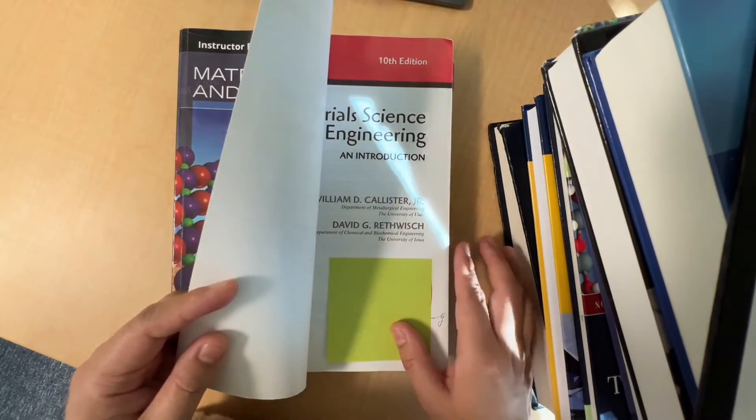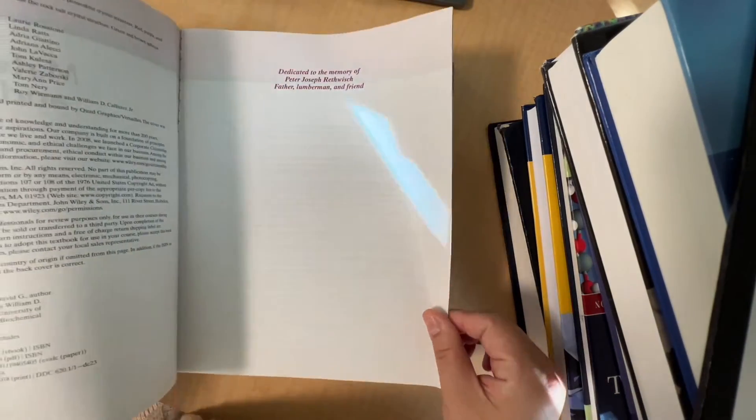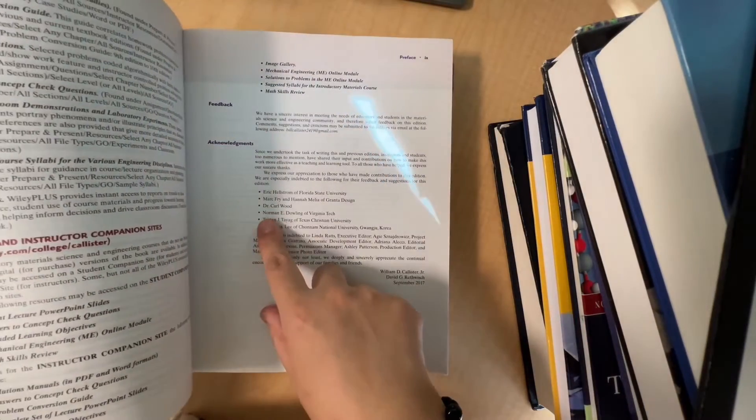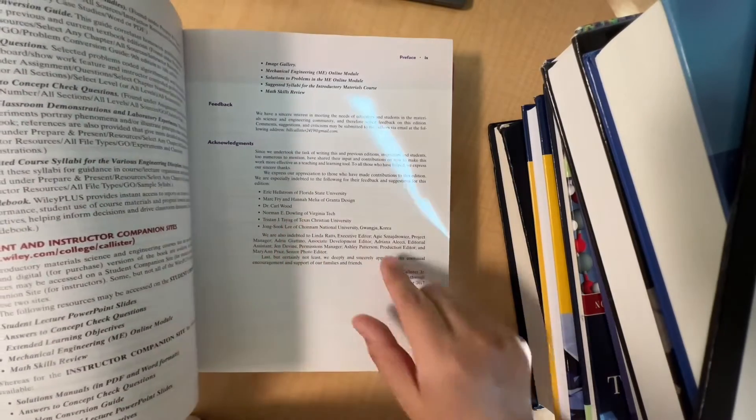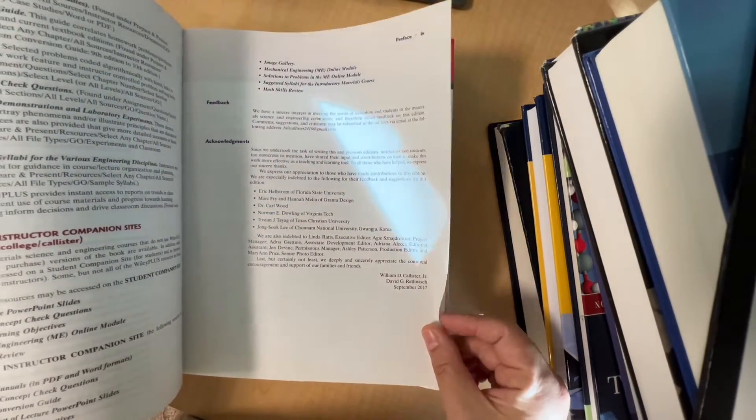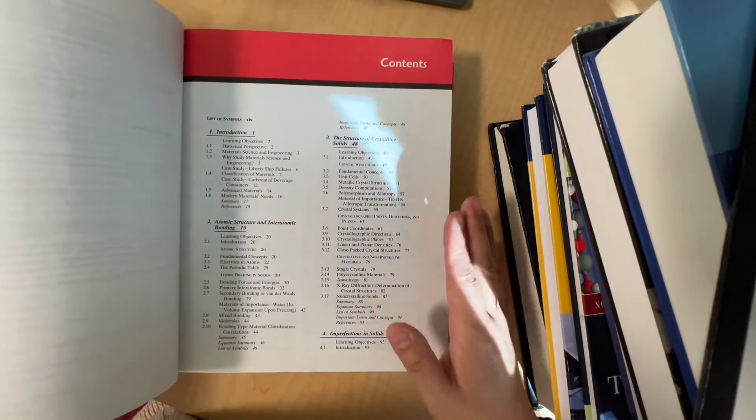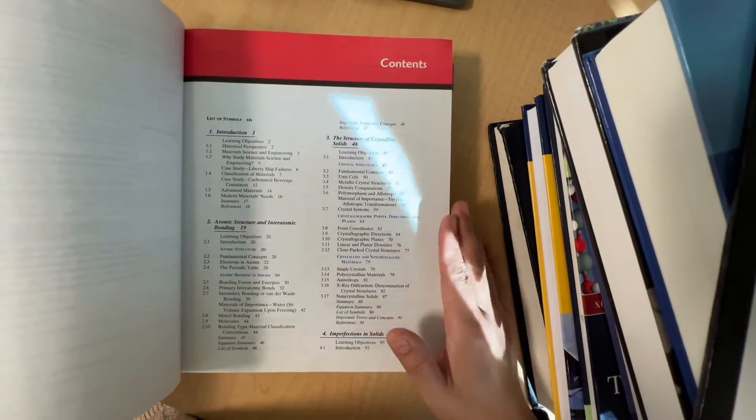These two professors are from the University of Utah and University of Iowa. If you turn through the pages, in the acknowledgment you'll see Norman Darling, one of our colleagues here at Virginia Tech, also contributed to the writing of the book.